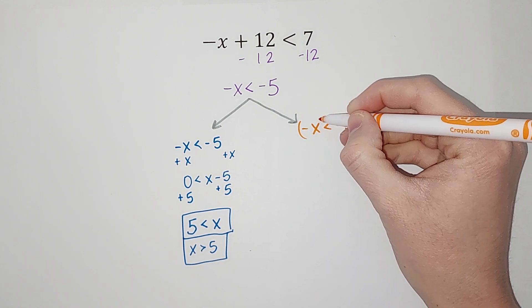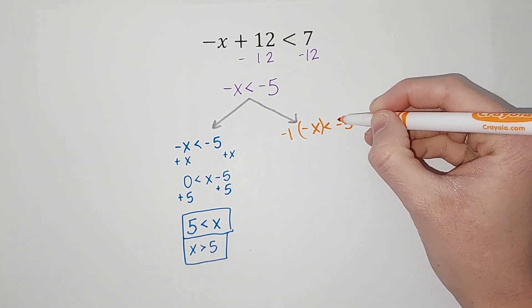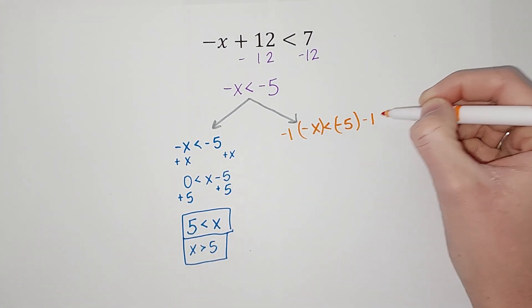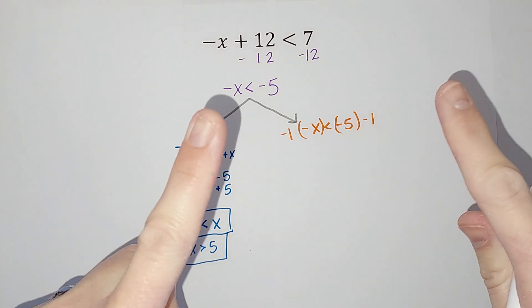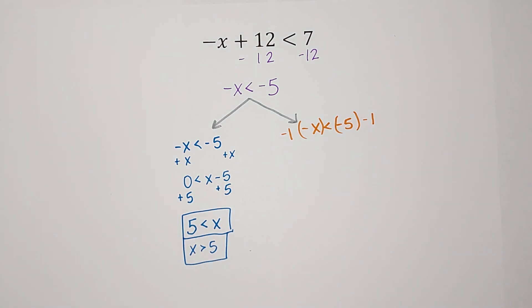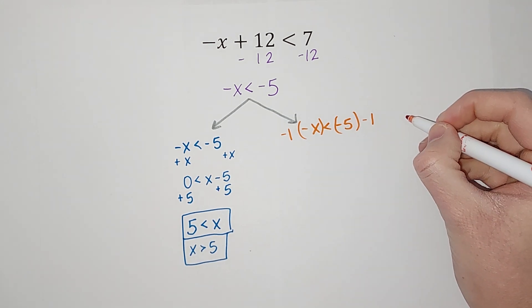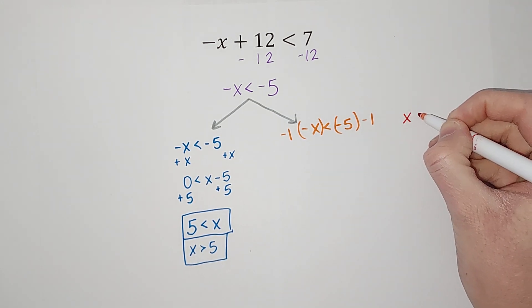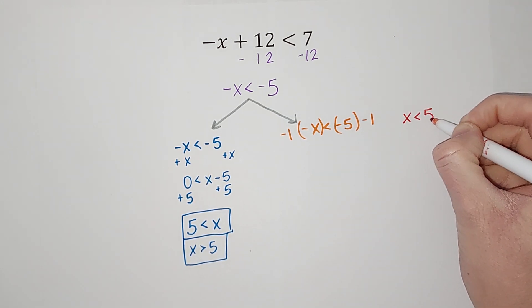So if I multiply by negative 1, that gets my x positive. Right? But watch what happens if I don't flip the sign like I'm supposed to. If I don't flip it, I'm gonna do it in red so you know it's bad. This is what we don't do. If we don't flip it, I end up with x is less than positive 5.